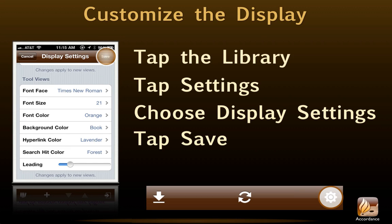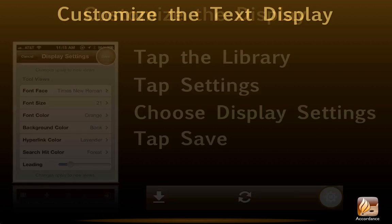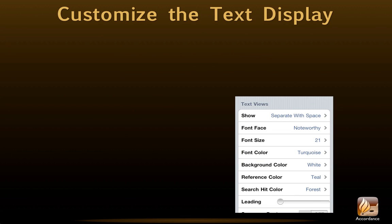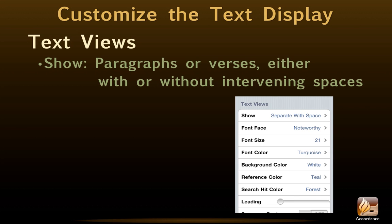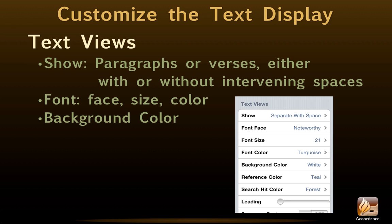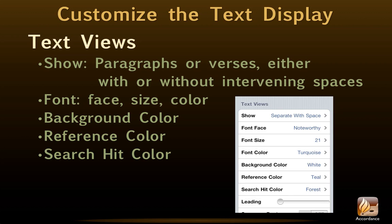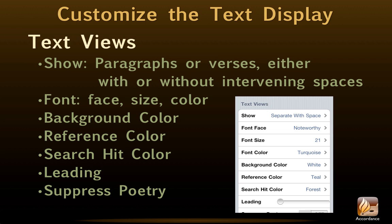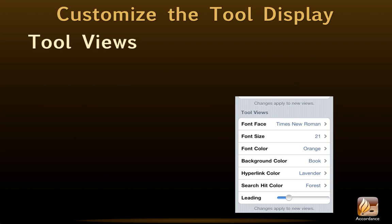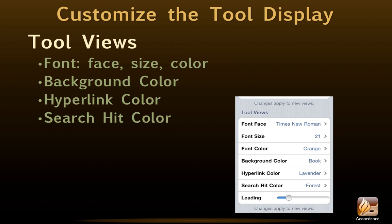Note that these changes will only apply to new views of both tools and texts. We can customize our text views in a variety of ways: show paragraphs or verses either with or without intervening spaces, and we have a choice among several different font faces, sizes, and colors. We can choose several different background colors, reference color, search hit color, and the amount of leading we'd like between the lines. We can also choose whether or not to suppress poetry, and whether or not to hide red letters. Likewise, the following aspects of tool views are customizable: font face, size and color, background color, hyperlink color, search hit color, and leading.